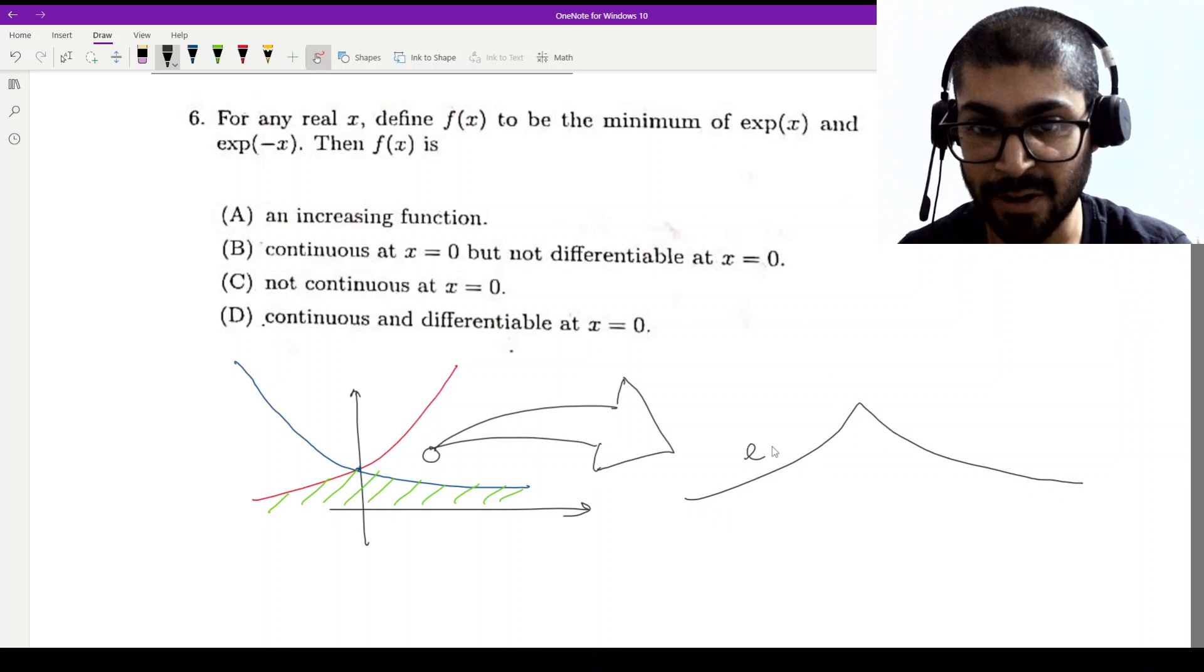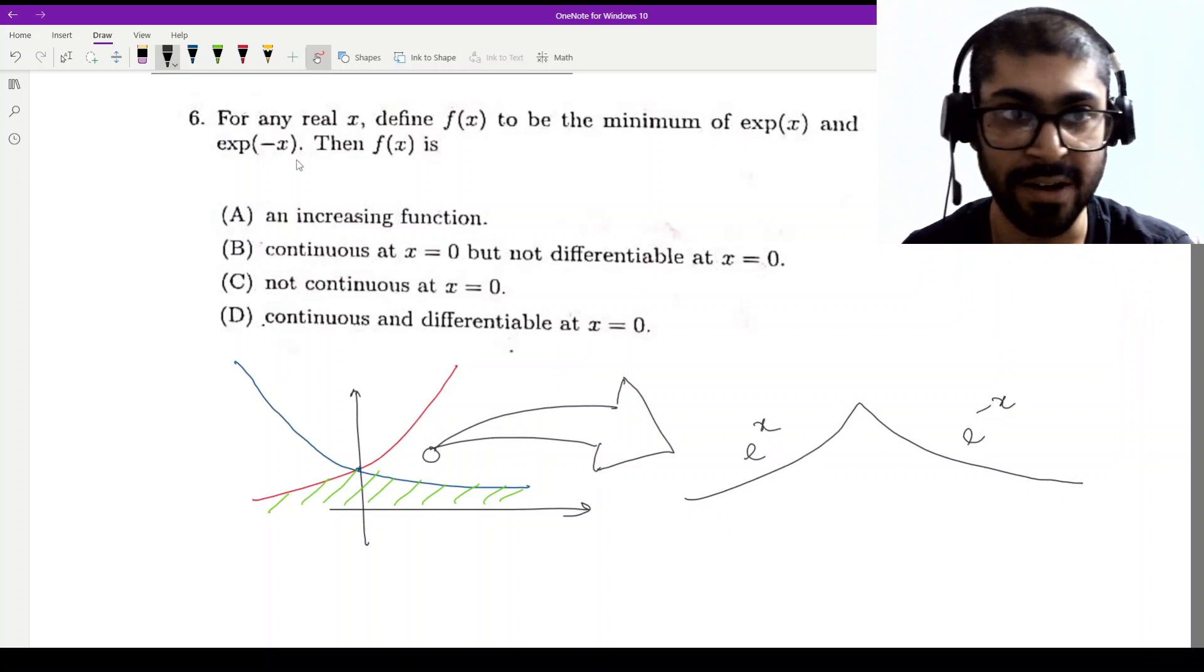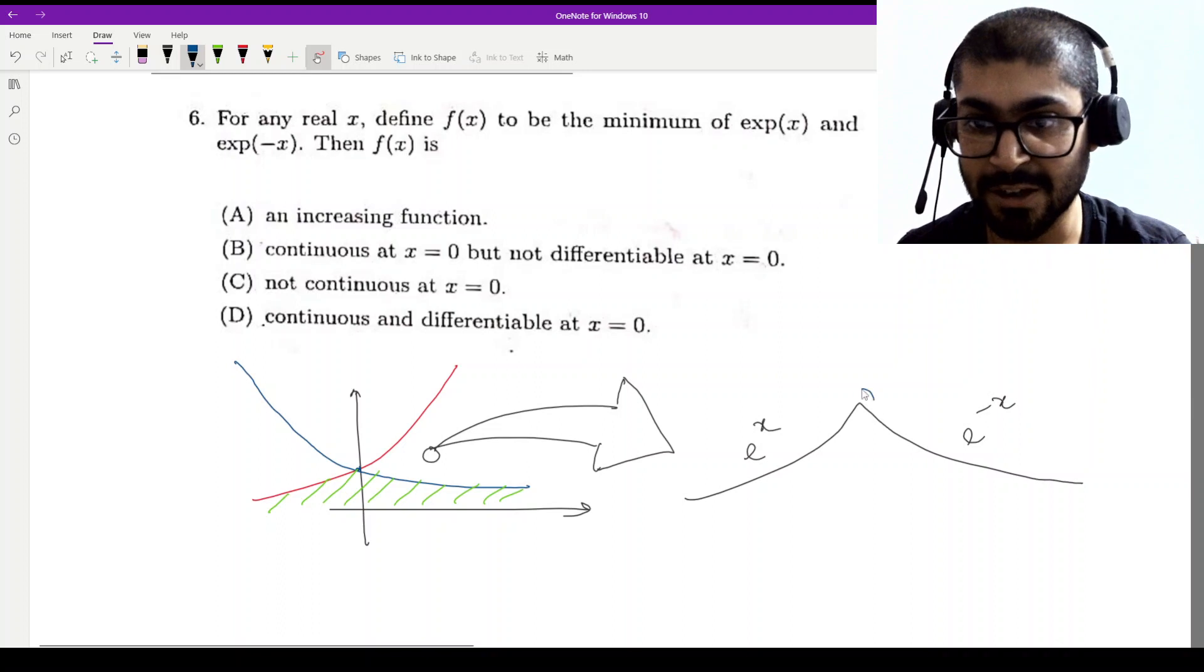This is e to the power x's arm. This is e to the power minus x's arm. So here you can see a beautiful corner here.